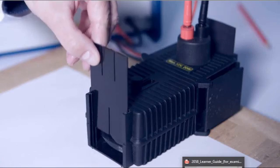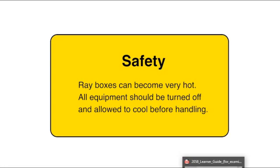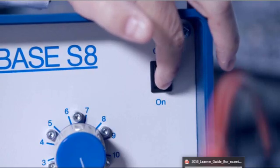A ray box can be used to investigate the properties of light. When a ray of light passes between air and a transparent material, it changes speed and refraction is observed.